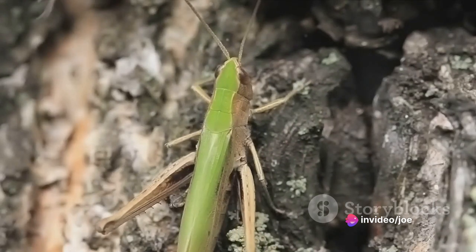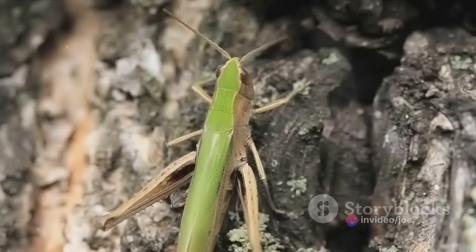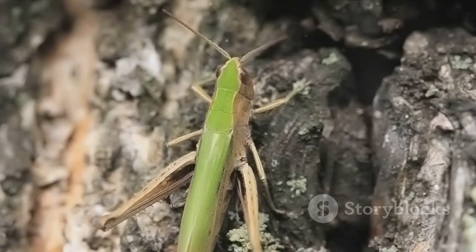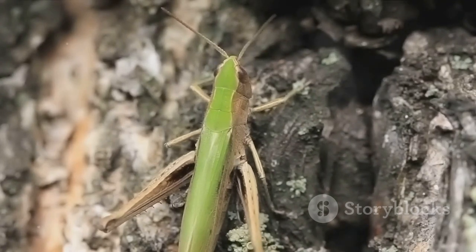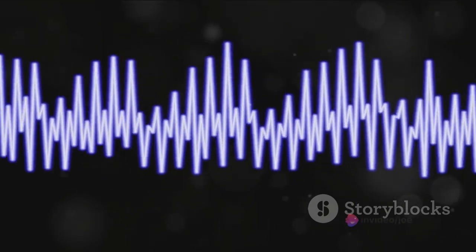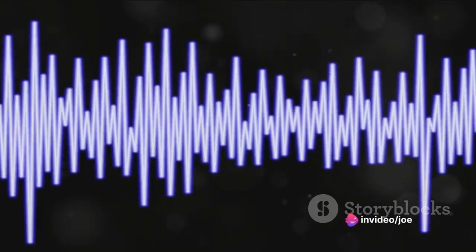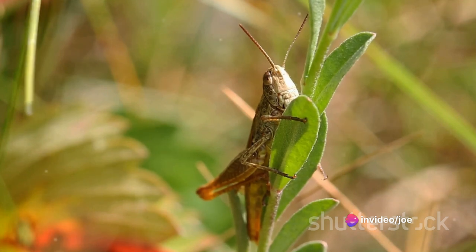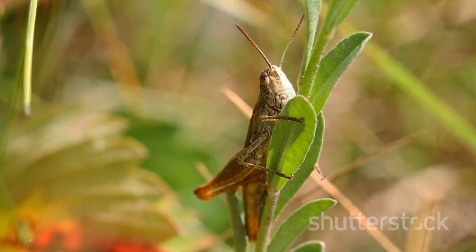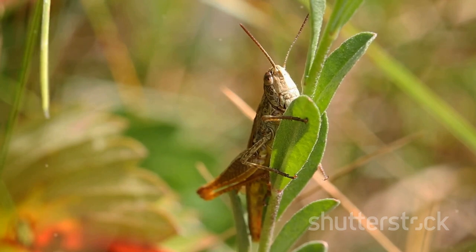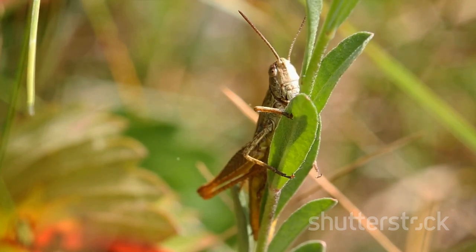These auditory organs or tympanal organs are small patches of ultra-thin cuticle that vibrate in response to sound waves. This vibration stimulates sensory cells, sending signals to the grasshopper's brain, effectively allowing it to hear. This unusual placement of ears gives grasshoppers a unique advantage in detecting the approach of predators, making them one of nature's most intriguing creatures.